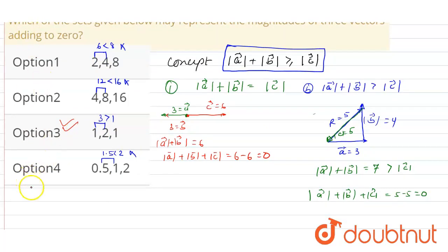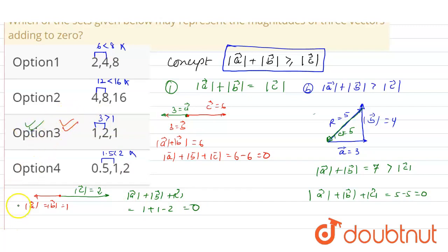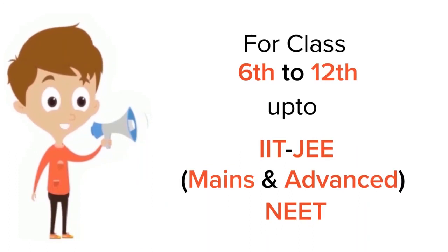We can re-verify option 3. Suppose two vectors A and B each have magnitude one in the same direction, and vector C has magnitude two in the opposite direction. Then A + B + C = 1 + 1 − 2 = zero. This confirms option number 3 is correct.